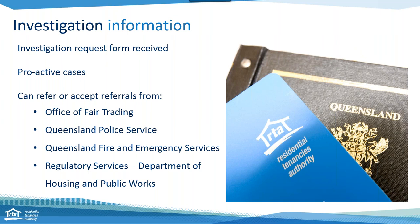The RTA receives investigations in three main ways. The primary way is through referral from our client service centre. Clients — be they tenants, agents, landlords, or community support groups — contact us and we send them an investigation request form, which can be obtained by calling our call centre on 1300 366 311.